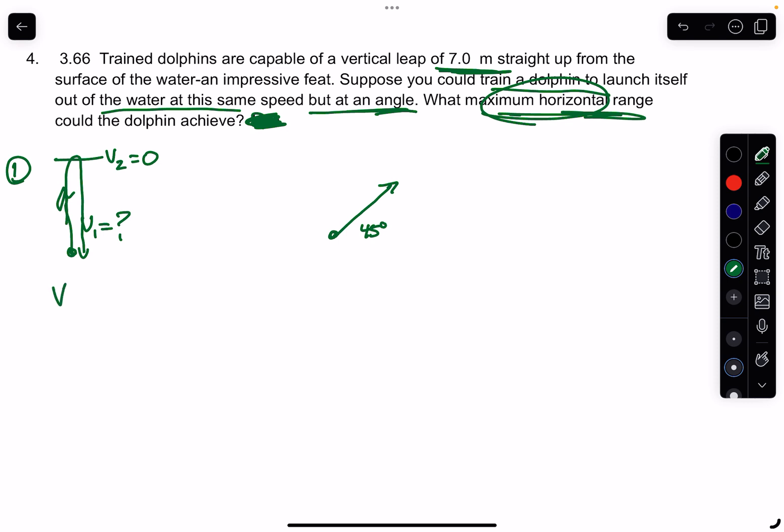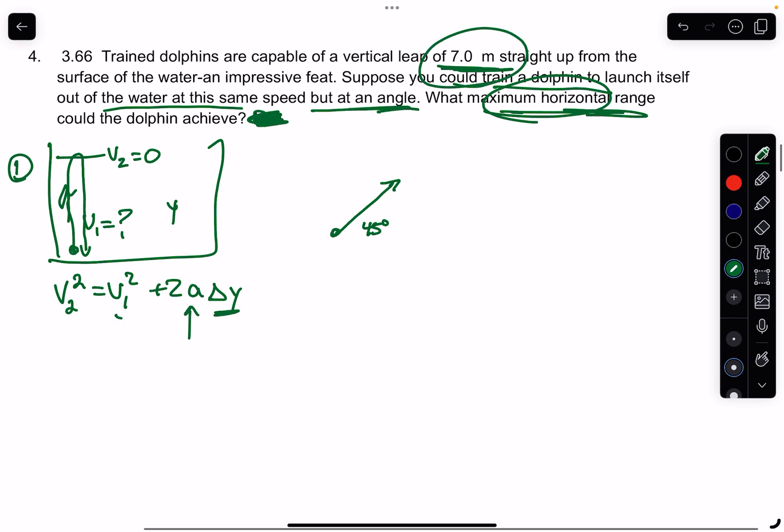So I'm going to use what I like to call equation C3: V2 squared equals V1 squared plus two times A times the change, and in this case, Y, because we're dealing with the Y plane up and down right here. Y is the seven meters. A, of course, is the acceleration of gravity. V1 is what you're solving for, and V2 equals zero. That's going to give you the V1.